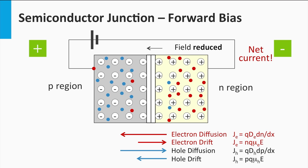First, since the width of the depletion zone is smaller — or in other words dx is getting smaller — the density gradients dn/dx and dp/dx become much larger. As a consequence, the current density related to diffusion becomes significantly larger. On the other hand, the electric field E is reduced, which means that the current density related to drift is getting slightly smaller.